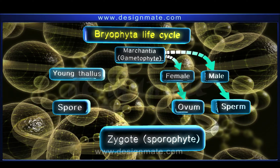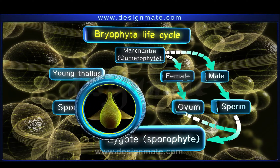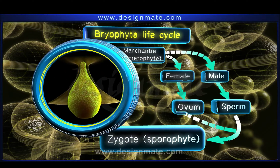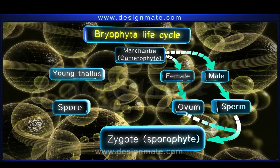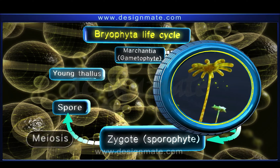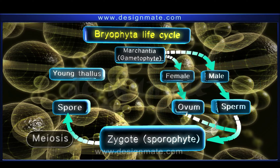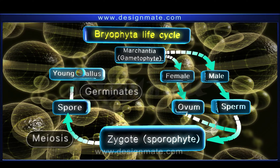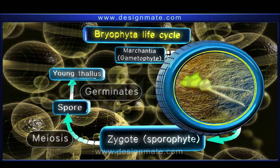These gametes unite during fertilization to form the zygote. The zygote is the sporophytic phase of the life cycle, and it undergoes meiosis to form spores. The spore germinates to form the young thalus.